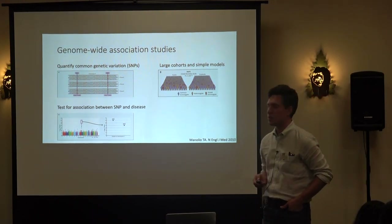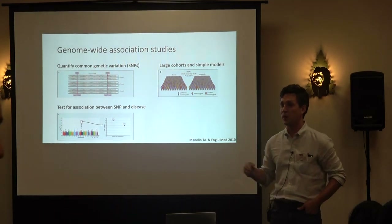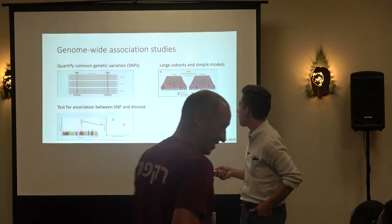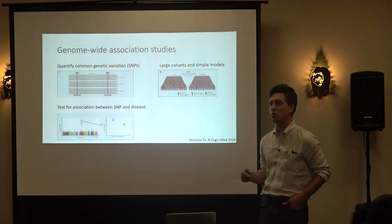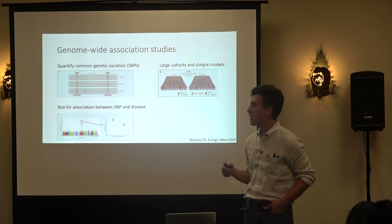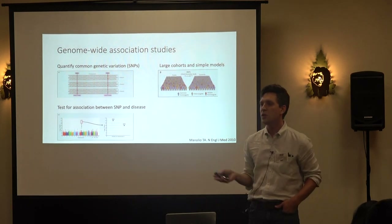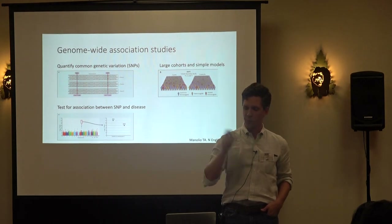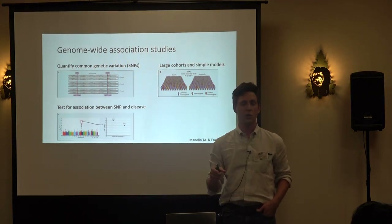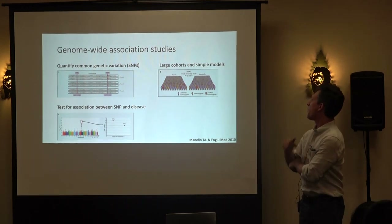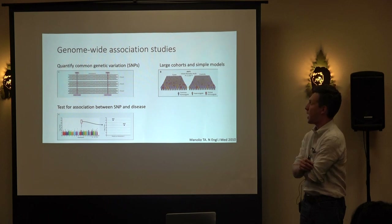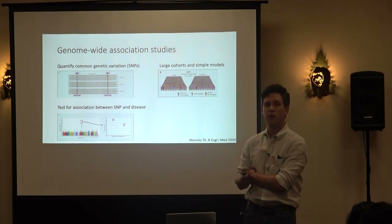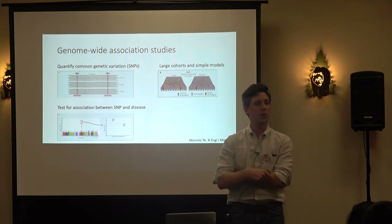So just a quick recap. The genome-wide association study is an extremely common and very successful approach to link regions in the genome with disease risk. The way it typically works is we first gather a large cohort of cases and controls, quantify the common genetic variation using some genotyping chip, and rely on very simple models — oftentimes just linear regression or logistic regression.